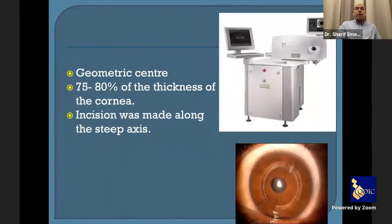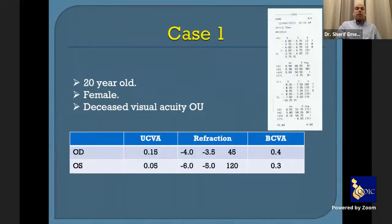We center the ring on the geometric center of the cornea. The depth of the tunnel should be between 75 to 80% of the cornea, and the incision is made along the steep axis. We use the femtosecond laser platform — most of us now use the FS laser to create the incision and the tunnel.